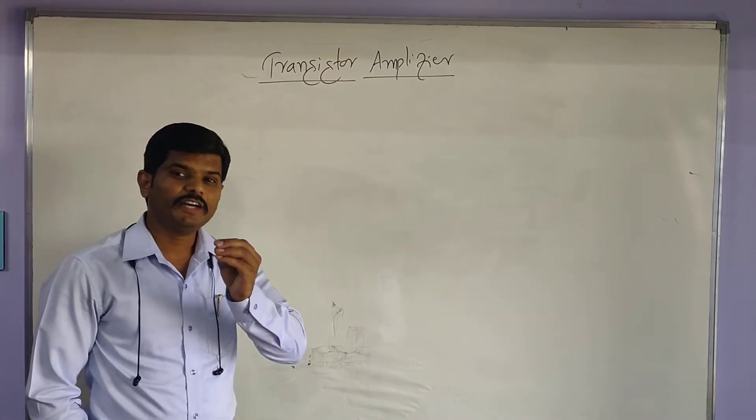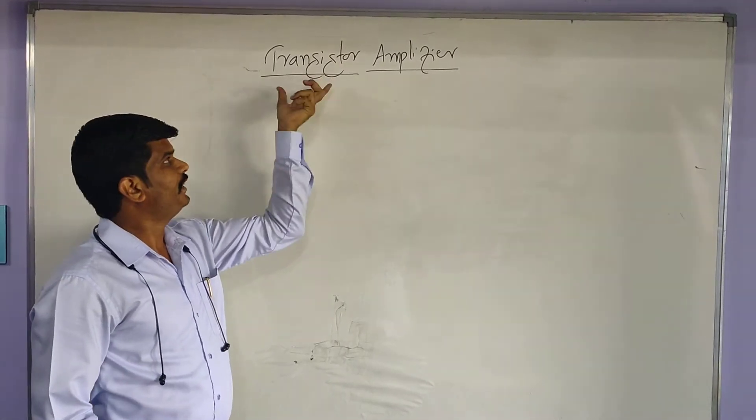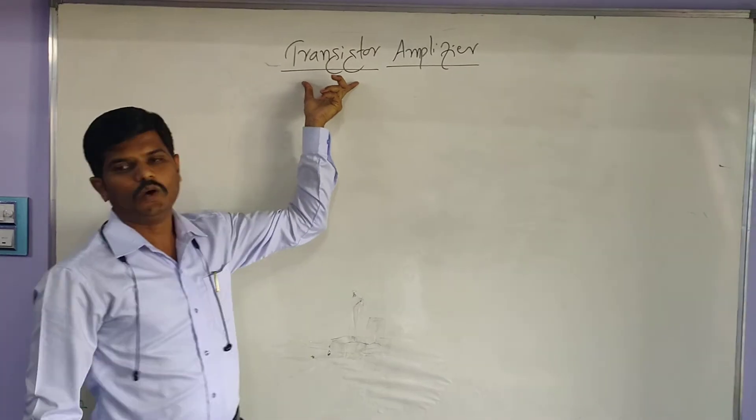This is the most important chapter for knowledge as well as for the vintage of marks in the whole syllabus. Transistor amplifier. The amplifier uses what? Prime element: transistor. We already know about transistor.